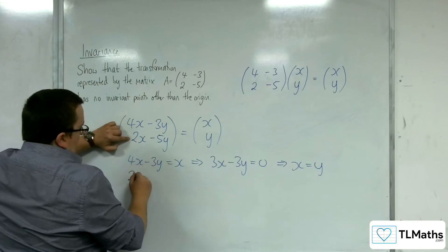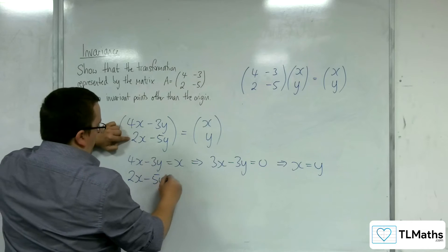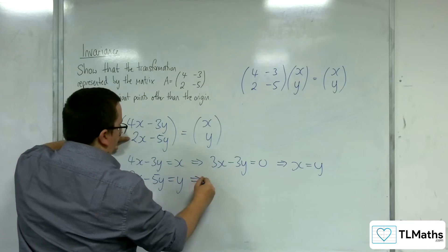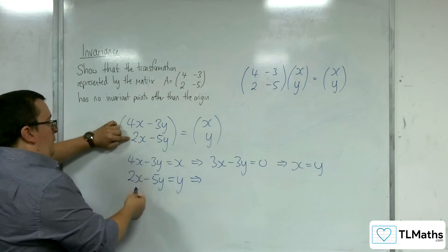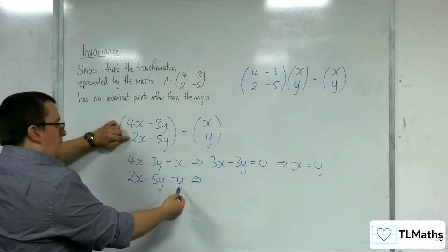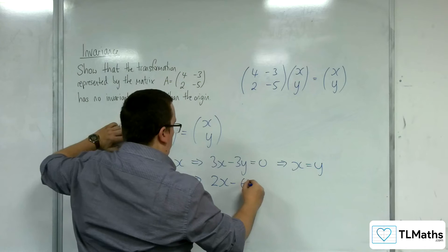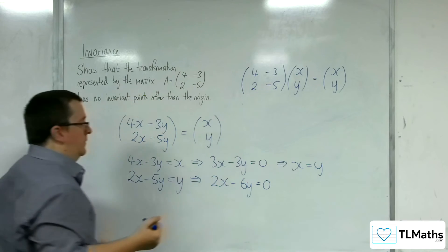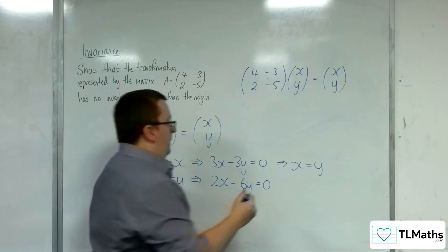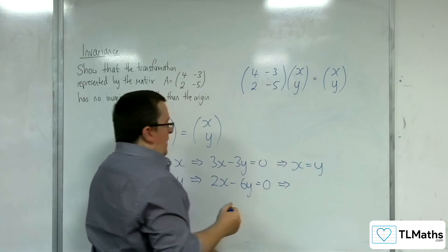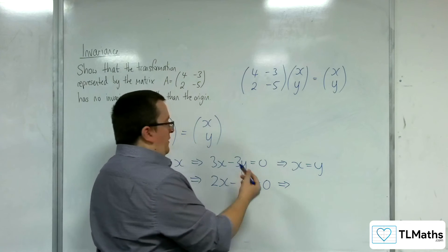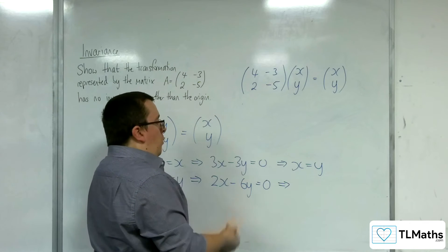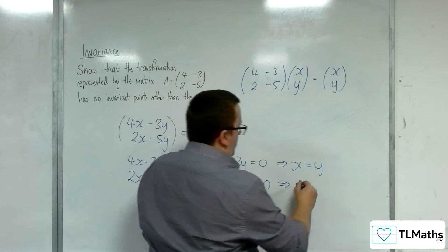In this case, in the bottom, we've got 2x take away 5y is equal to y. So 2x take away 5y, take away y is 2x take away 6y is equal to 0. And that means that 2x is equal to 6y, so y will be equal to 1 third x.